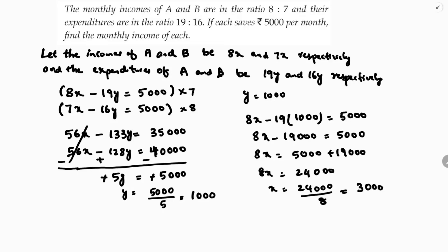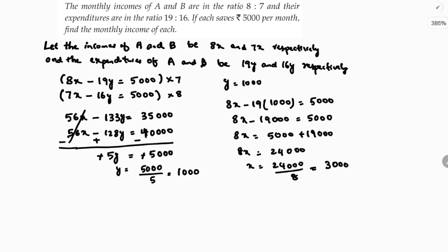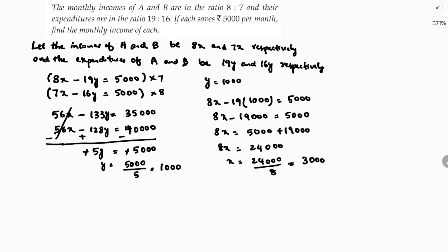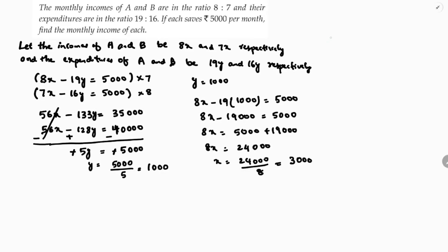So here in this question they're asking, we got x and y, so they're asking find the monthly income of each. So first one A, A's income we considered as 8x, so 8×3000, which is nothing but A's income is 24000.